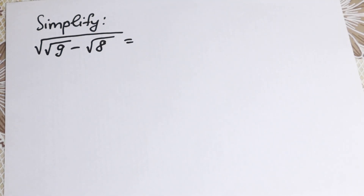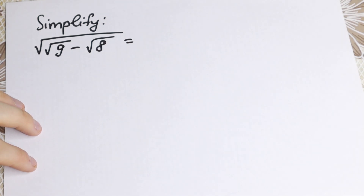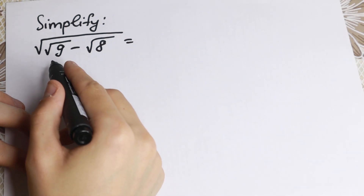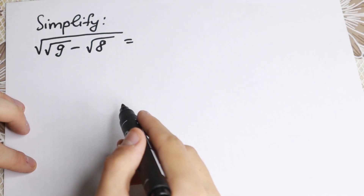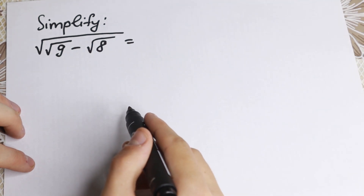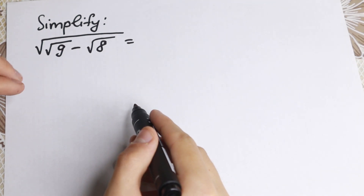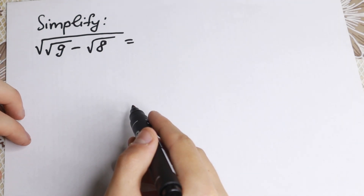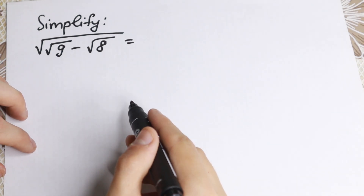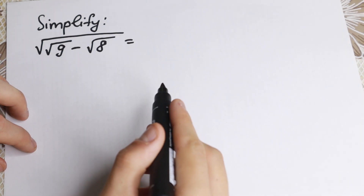Hello everyone! Happy to see you here, and we have a really interesting problem today. We need to simplify the square root of the square root of 9 minus the square root of 8. Take a look closely — how can you do this?